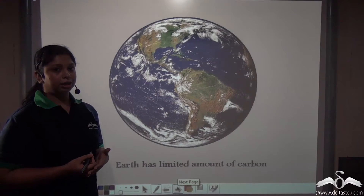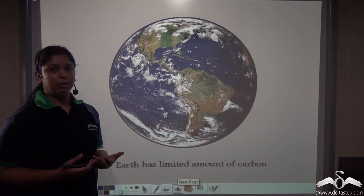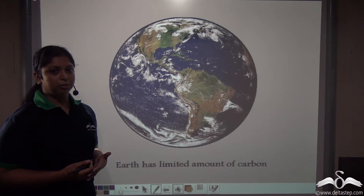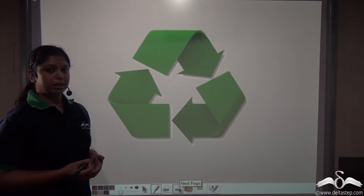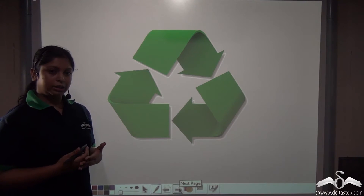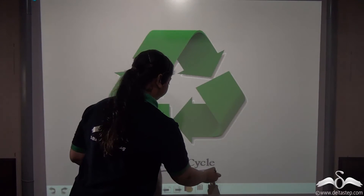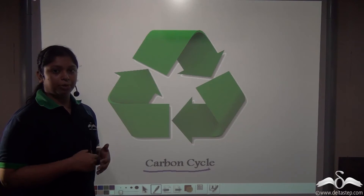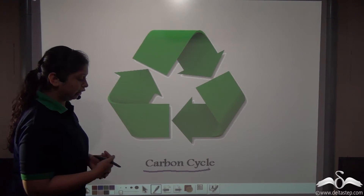The earth contains a reserved form of carbon. We are using carbon in our day-to-day lives, so the carbon reserve might have been finished by now — but that is not so. The reason is carbon is always recycled by a natural process, and this process is known as the carbon cycle. Let us see some examples by which we take up carbon from the atmosphere and also give carbon back into the air.